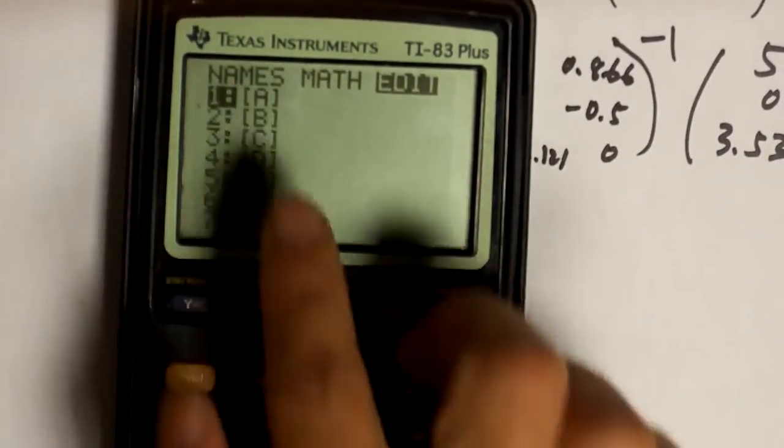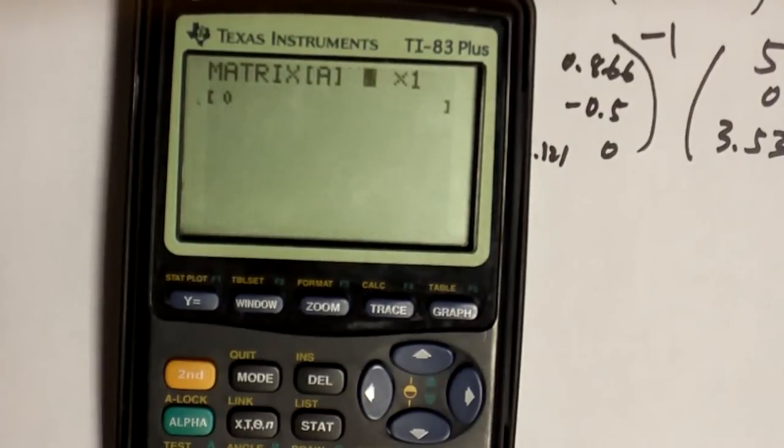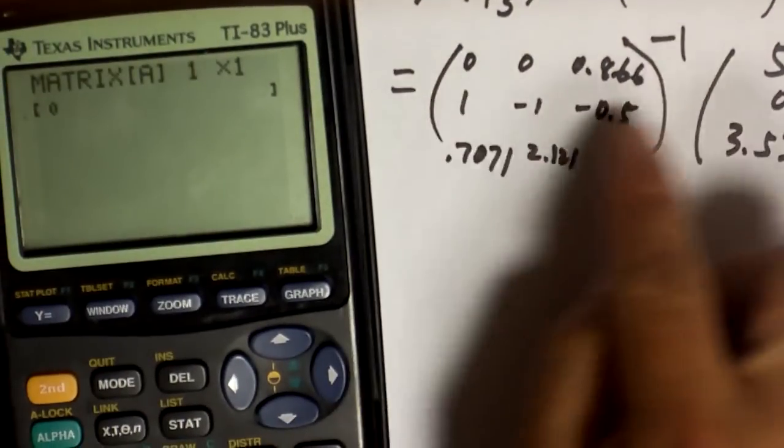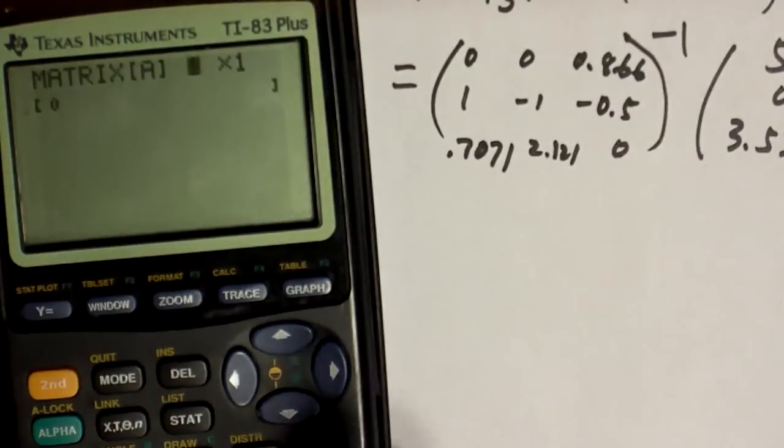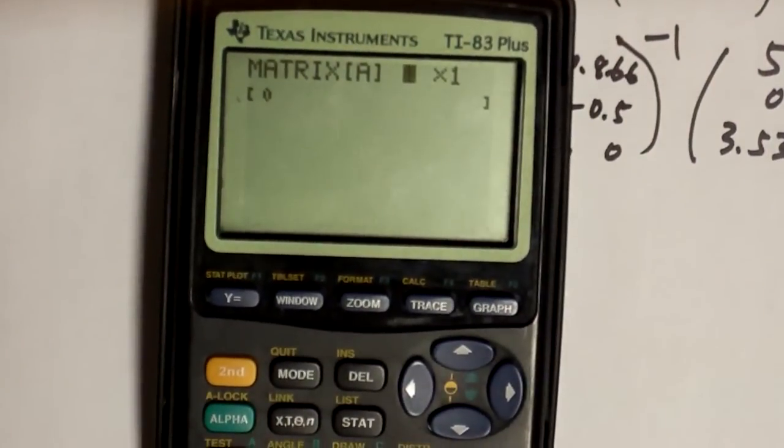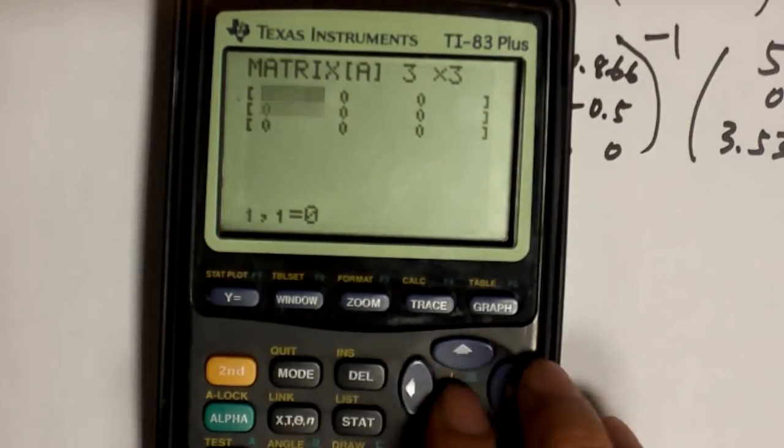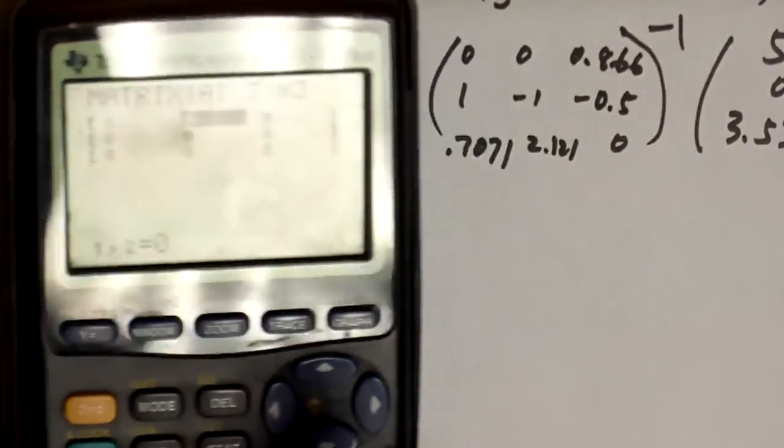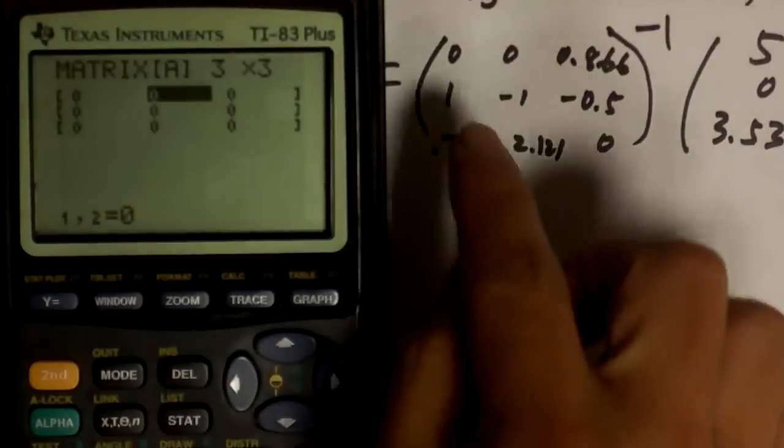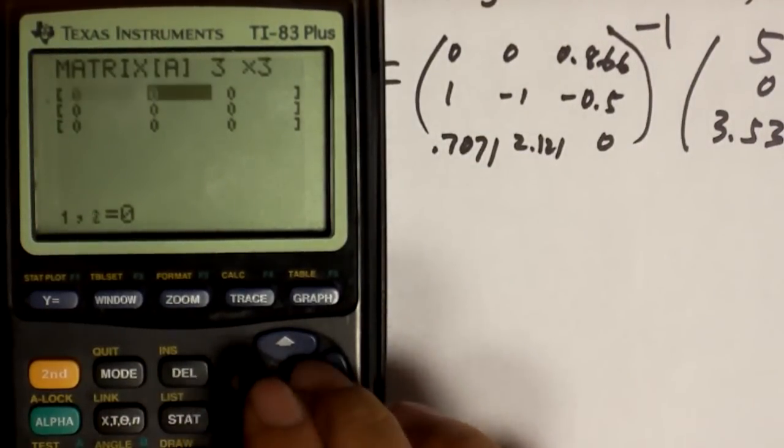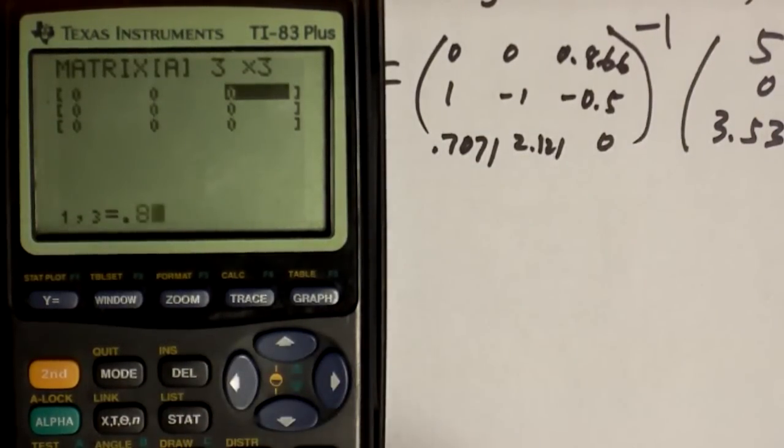Now, A has three rows and three columns. So, it's a 3 by 3 matrix. I'm going to put 3 by 3. And then, that gives you adequate room for putting these numbers in. So, again, the numbers are 0, 0, 0.866.